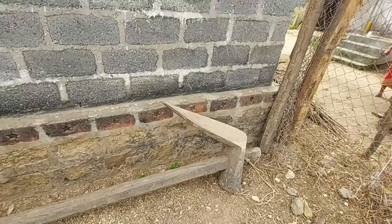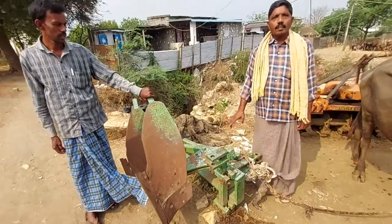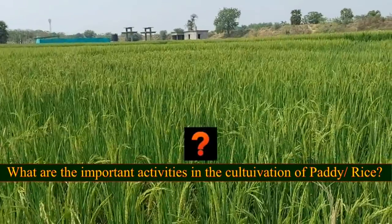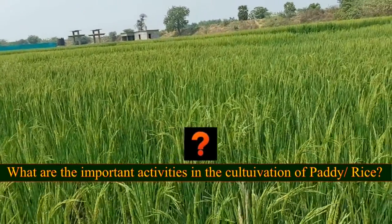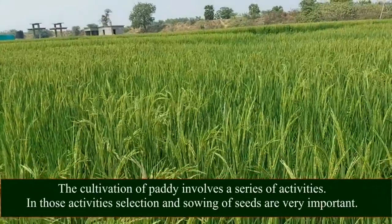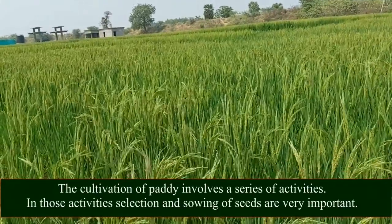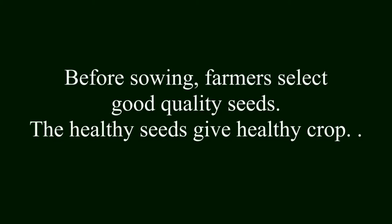Agricultural tools used include the wooden plough, leveling tool, iron plough attached to a tractor, and puttler. In the cultivation of paddy, a series of activities are involved. Among these, selection and sowing of seeds are very important. Before sowing, farmers select good quality seeds, as healthy seeds give healthy crops.